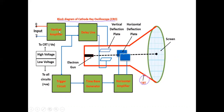First, input voltage is given to the vertical amplifier. The weak signals which are received will be amplified and converted into strong signals. Then this will be transferred to the delay line.